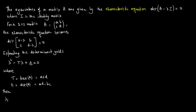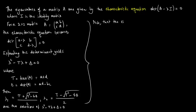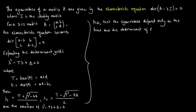The solutions are lambda 1 equal to tau plus the square root of tau squared minus 4 delta all divided by 2, and lambda 2 equal to tau minus the square root of tau squared minus 4 delta all divided by 2. So lambda 1 and lambda 2 are the solutions of lambda squared minus tau lambda plus delta equals 0. Note that the eigenvalues depend only on the trace and the determinant of A.